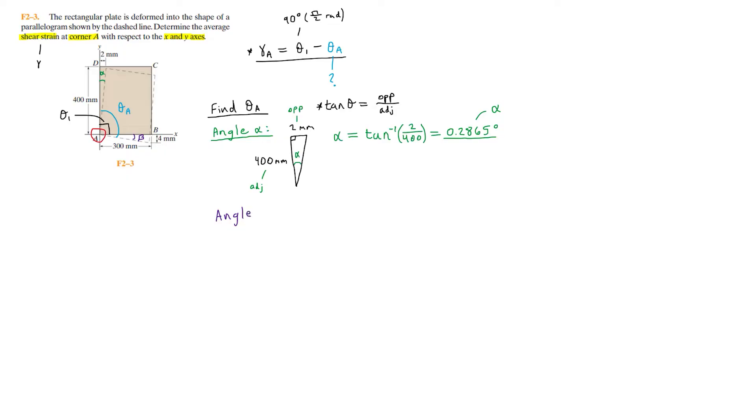Now we can find angle beta, which is the angle formed with respect to the x axis. This creates another similar right triangle along the horizontal, where this is four millimeters, and this is 300 millimeters. Beta equals inverse tangent of the opposite side over the adjacent, which is four over 300, and that is roughly equal to 0.7639 degrees.